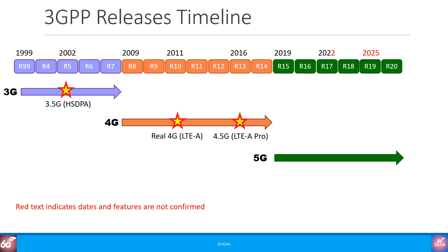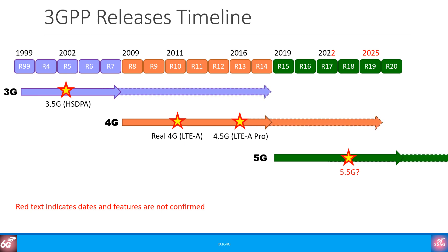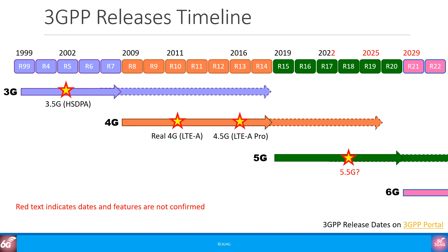Release 16 was completed in June 2020. Release 17 features are ready to be standardized but we are still in the beginning phases. Most likely Release 18 will be called 5.5G or something like that. One thing to remember is that regardless of newer technology being available, the older technology would still undergo enhancements and bug fixing, as shown for 3G, 4G, and 5G. If we continue in a similar fashion, we can expect the first release of 6G in 2029, give or take one year.